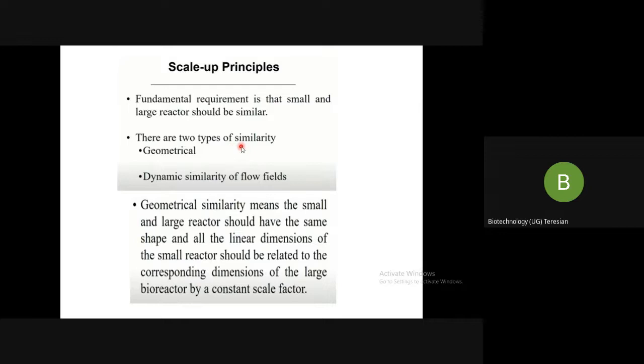There are two types of similarity: geometrical similarity of the reactors and dynamic similarity of flow fields. Geometrical similarity means the small and large reactor should have the same shape, and all the linear dimensions of the small reactor should be related to corresponding dimensions of the large bioreactor by a constant scale factor.